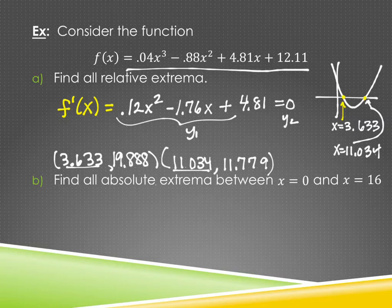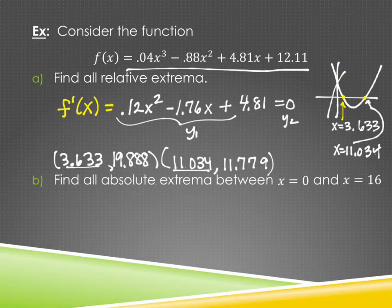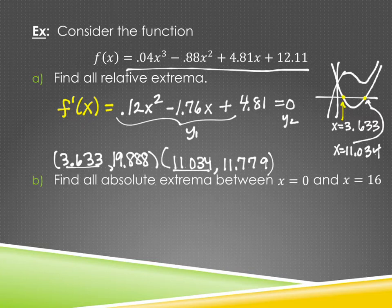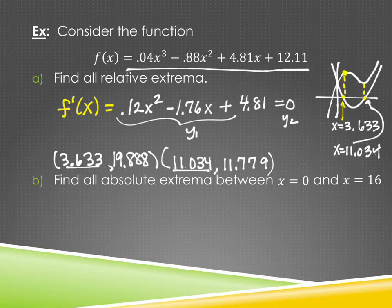To determine if each is a max or min, I graph the original equation. The graph goes uphill, then must go downhill since those were negative derivative values, then back uphill since these are positive. The graph has that general shape. So the first location at x = 3.633 is a relative max, and the second location at x = 11.034 is a relative min.